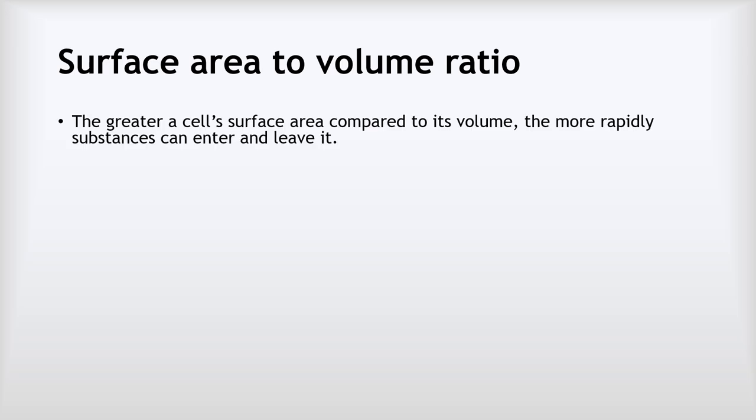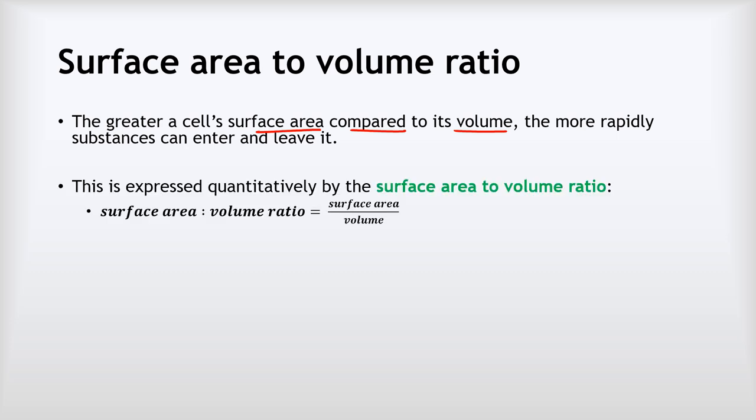We've seen that surface area is super important for maximising the rate of diffusion. But what's more important isn't so much the surface area alone as the surface area compared to its volume. The greater the surface area compared to the volume, the more rapidly substances can enter and leave. We express this with the surface area to volume ratio, found by dividing the surface area by the volume.